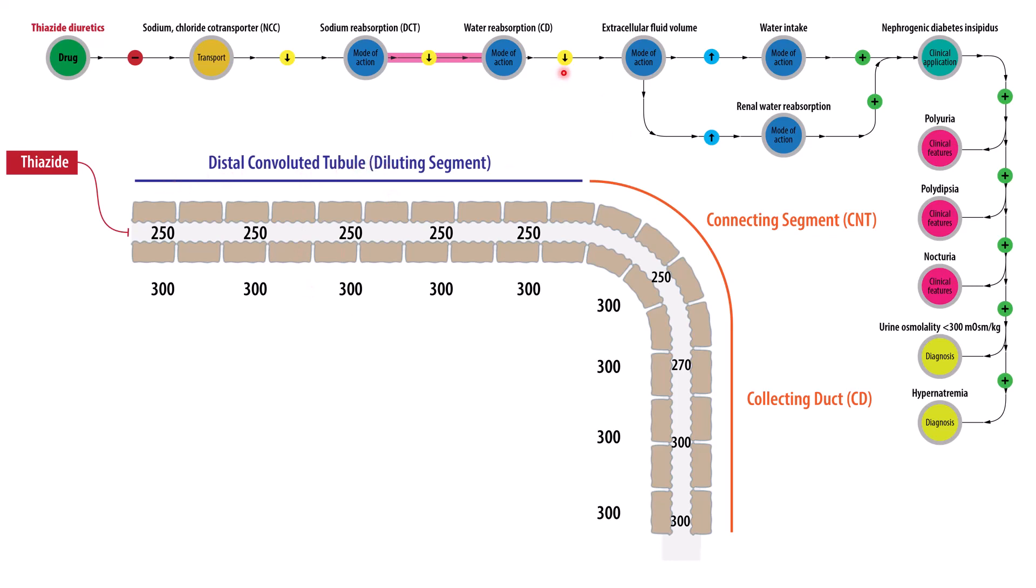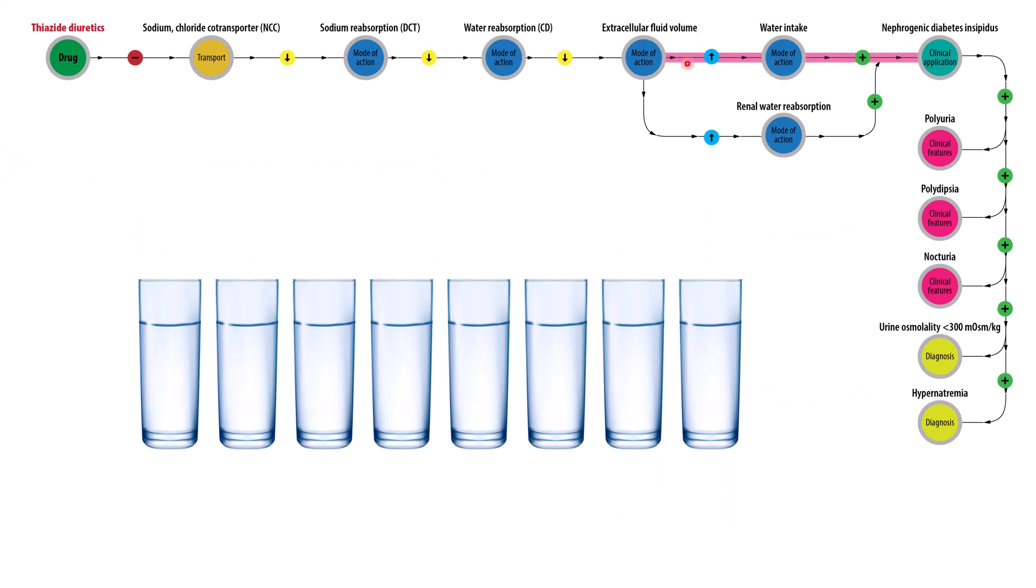And then that in turn leads to a decrease in the extracellular fluid volume. And that has two main effects. One, it increases the driving force for water consumption. So that's where we have this up arrow here. And then that helps treat nephrogenic diabetes insipidus.